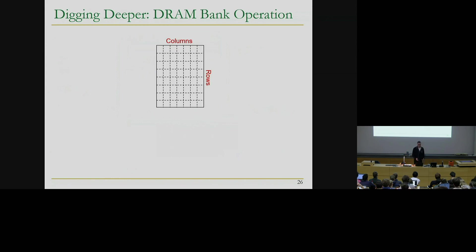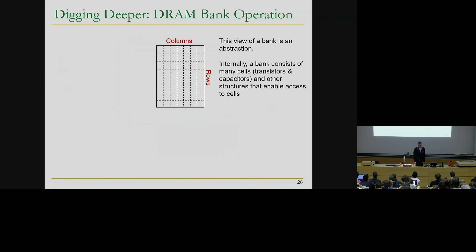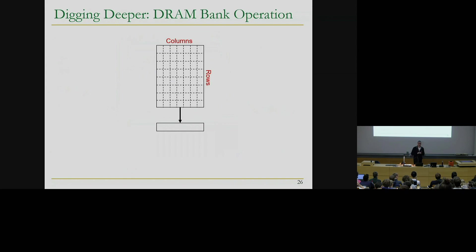Here we are showing a single DRAM bank as an example. It basically consists of a two-dimensional array of DRAM cells organized as columns and rows. Along with this 2D array of DRAM cells inside the DRAM bank, there's also a structure called the row buffer. This is essentially a cache for the row that you would like to access. In order to access data from a row, the first operation is to load the data of that row to the row buffer. The row buffer is made of sense amplifiers, which are used to detect the data stored in those small DRAM cells. The capacitors are very small in DRAM, so the sense amplifiers are essential to amplify that data to make it readable by the processor.